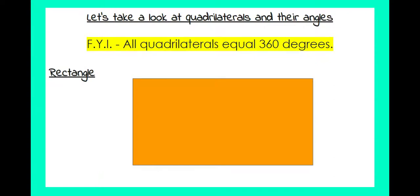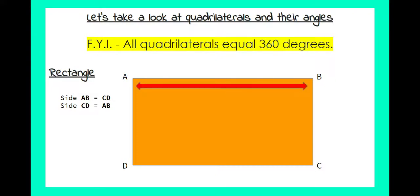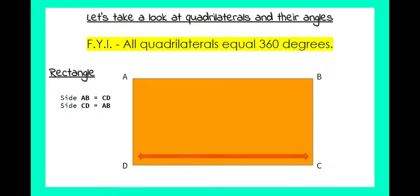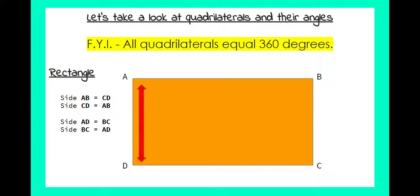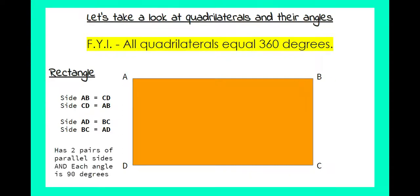Next is a rectangle with angles A, B, C, and D. Side AB is equal and parallel to side CD, and in reverse CD is equal to AB. Side AD is equal and parallel to side BC, and in reverse BC is equal and parallel to AD. A rectangle has two pairs of parallel sides, and each angle is 90 degrees.